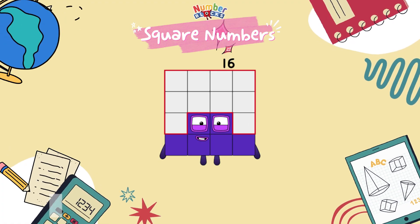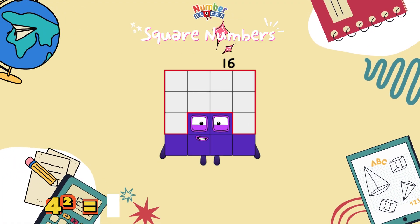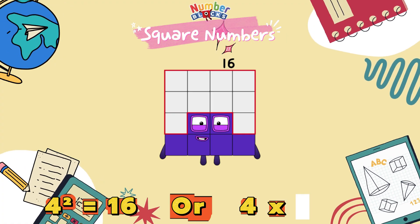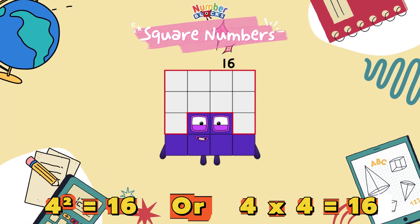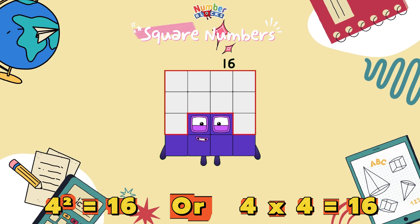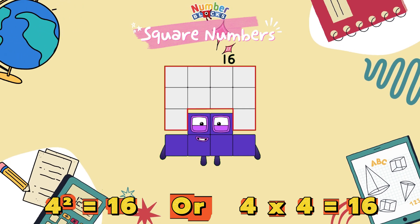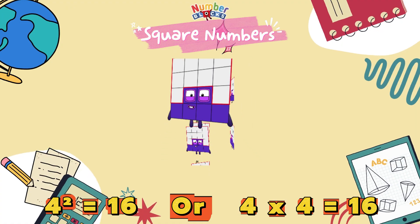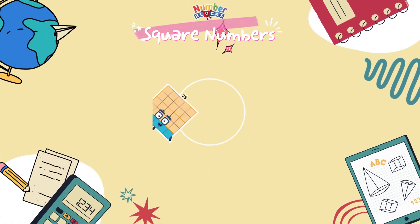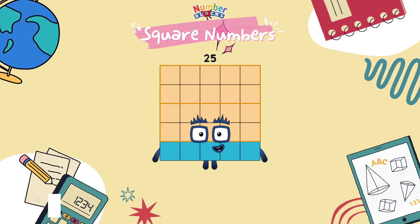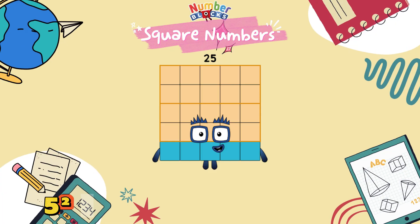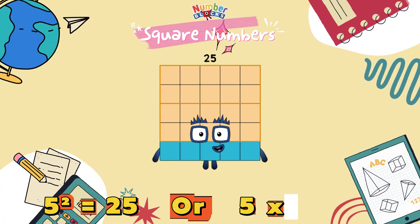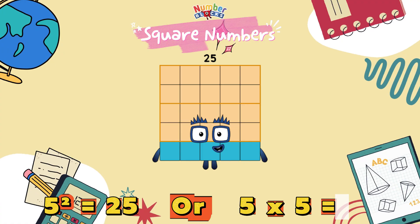4 squared is equals to 16, or 4 times 4 is equals to 16. 5 squared is equals to 25, or 5 times 5 is equals to 25.